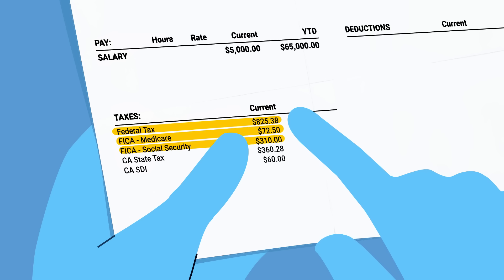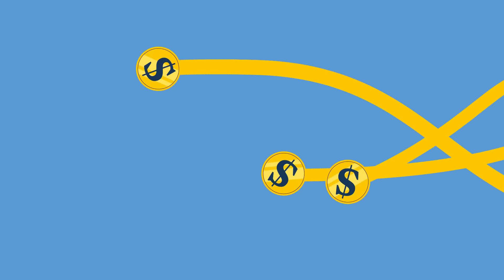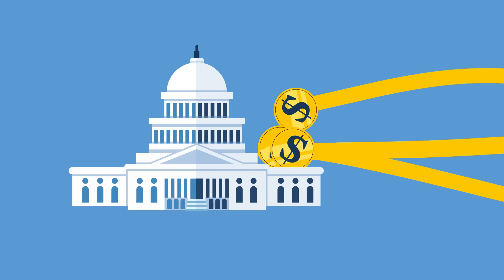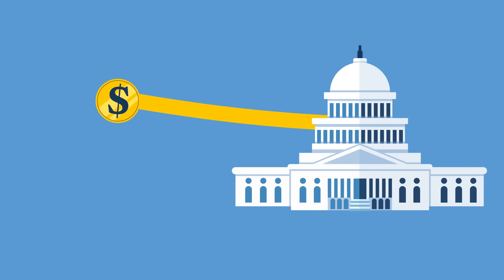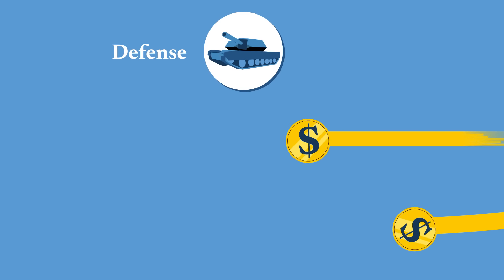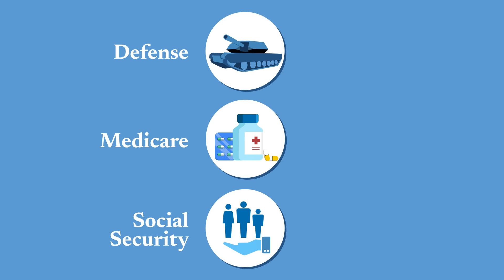Together, individual and corporate income taxes make up the largest source of revenue for the U.S. federal government, funding things like national defense, Medicare, and Social Security.